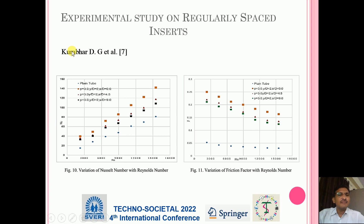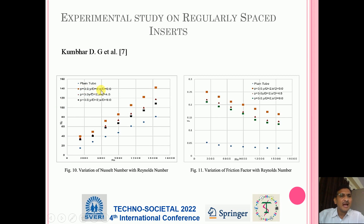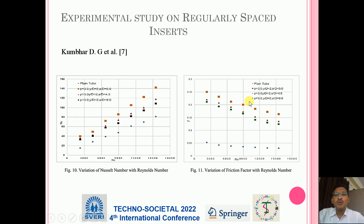In another study by Kumbar DG et al., a graph of Reynolds number versus Nusselt number is plotted. As Reynolds number increases, Nusselt number increases. The highest Nusselt number is where p=3, y/d ratio is 2, and s/d ratio is 0. In another study, Reynolds number versus friction factor is plotted, and as Reynolds number increases the friction factor drops. The friction factor is more for p/d ratio of 3, y/d ratio of 2, and s/d ratio of 0.